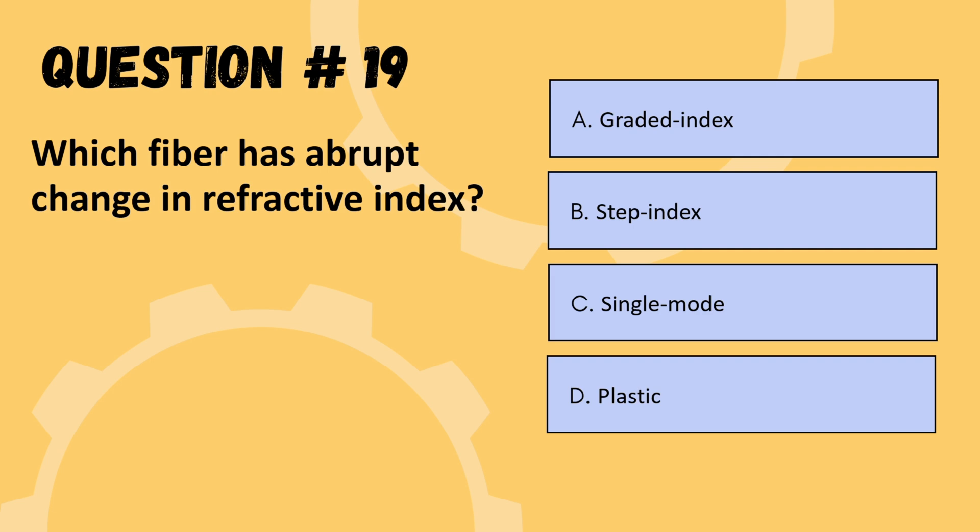Next question: which fiber has an abrupt change in refractive index? Options are graded index, step index, single mode, or plastic. The correct option is B: step index.